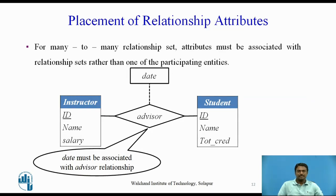The choice of attribute placement is more clear-cut for many-to-many relationship sets. Let us specify the perhaps more realistic case that advisor is a many-to-many relationship set, expressing that an instructor may advise one or more students and that a student may be advised by one or more instructors. If we are to express the date on which a specific instructor becomes the advisor of a specific student, date must be an attribute of the advisor relationship set rather than of either participating entity. If date were an attribute of student, we could not determine which instructor became the advisor on that particular date. When an attribute is determined by the combination of participating entity sets rather than by either entity separately, that attribute must be associated with the many-to-many relationship set.